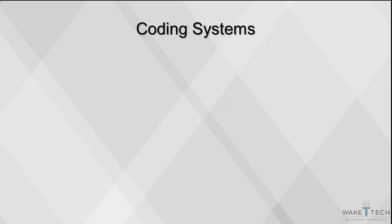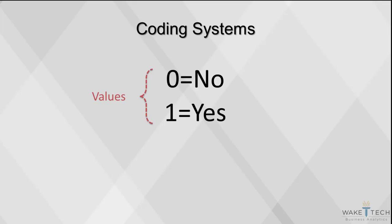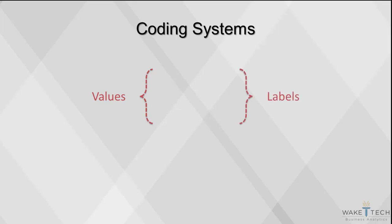A common coding system for binary variables is the following: 0 equals no, and 1 equals yes, where the number is the value assigned and yes or no is the label of that value. Some like to use a system of ones and twos, where 1 equals no and 2 equals yes.